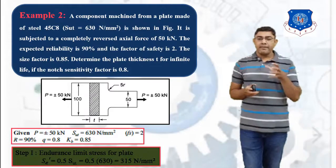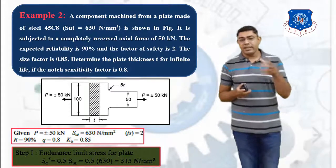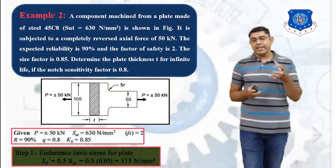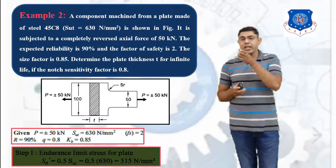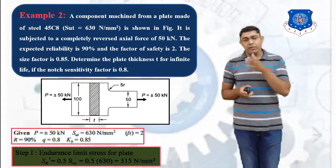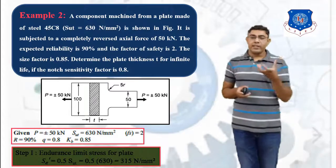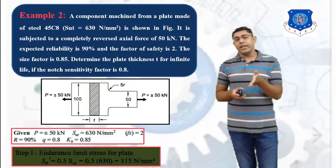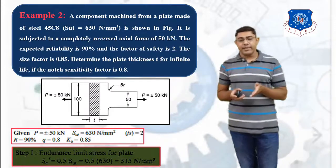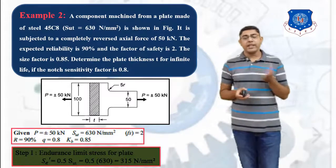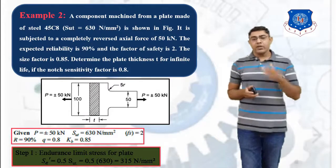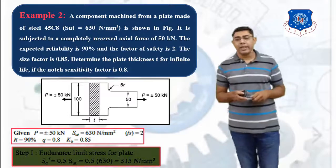Our aim is to calculate the endurance limit for this particular plate. The equation for endurance limit is: Se = KA × KB × KC × KD × Se'. We already have Se'. We must now calculate all the correction factors KA, KB, KC, and KD to find the endurance limit for our actual mechanical component.